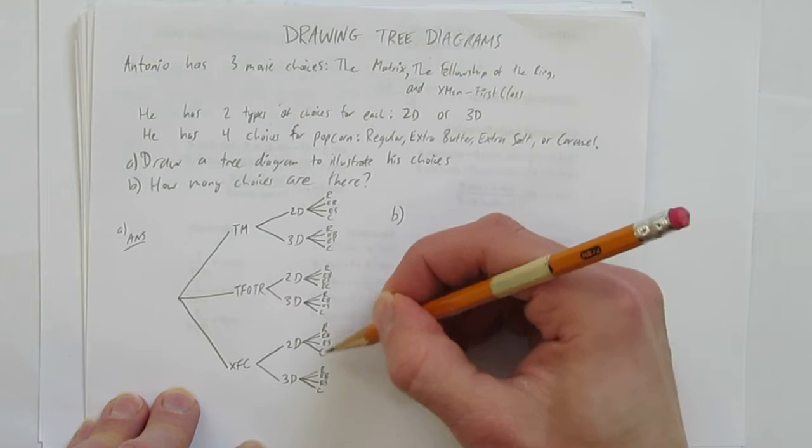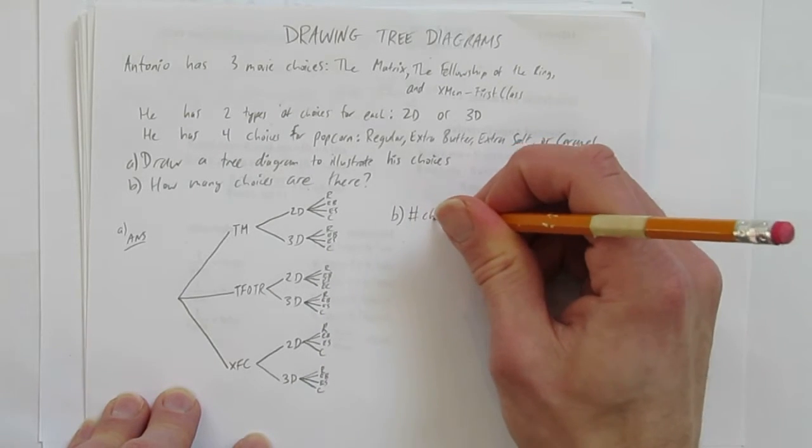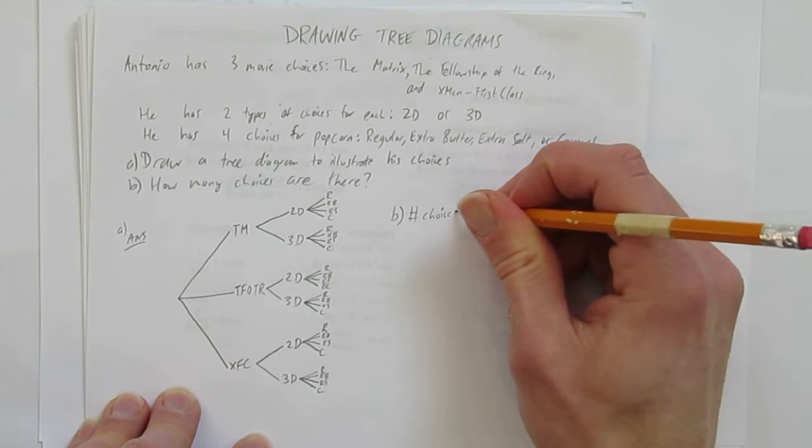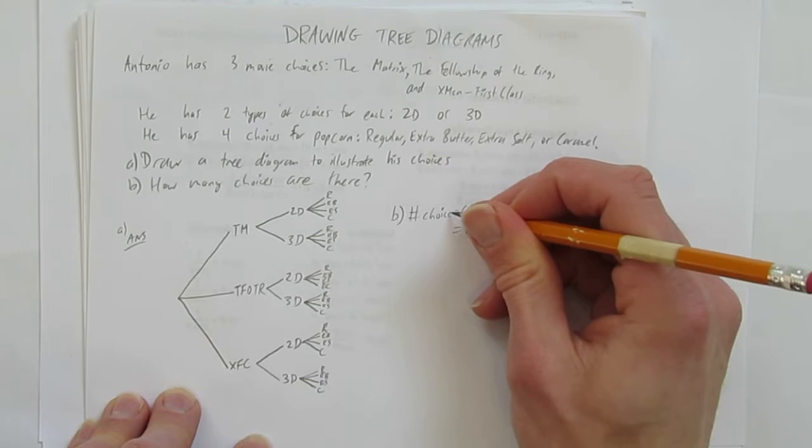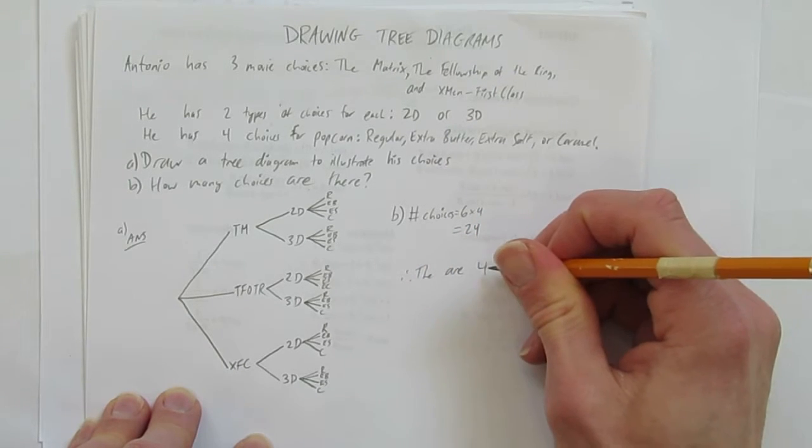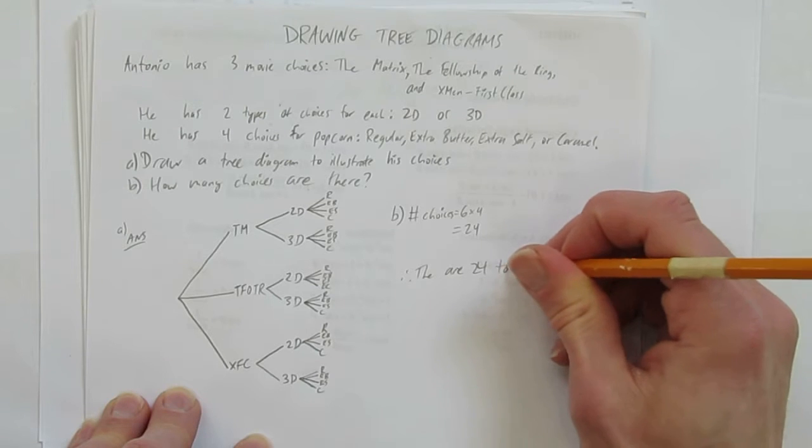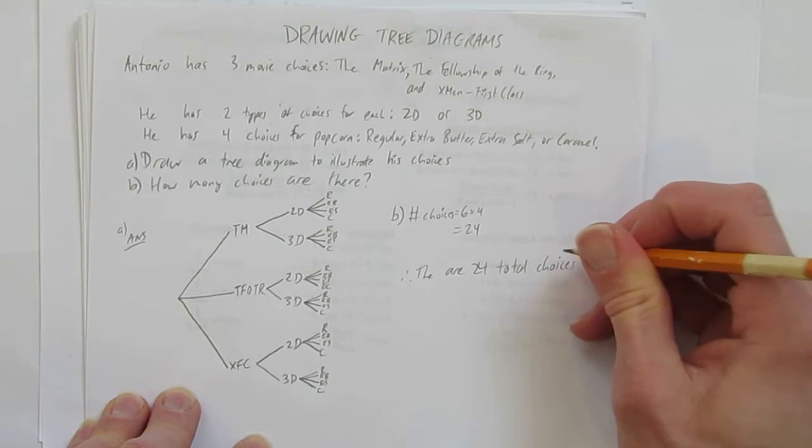One, two, three, four, five, six. And so the total number of choices is just six times four, which is, of course, 24. Therefore, there are 24 total choices.